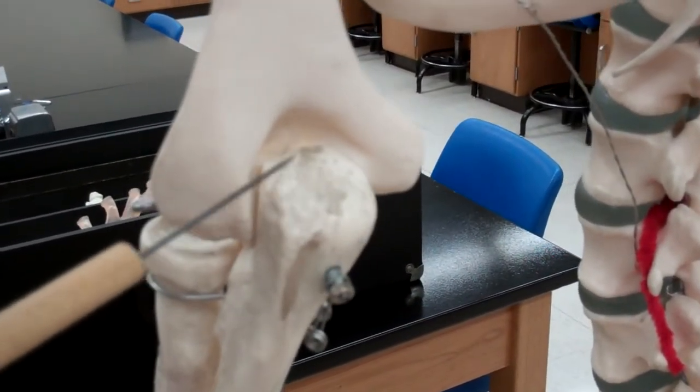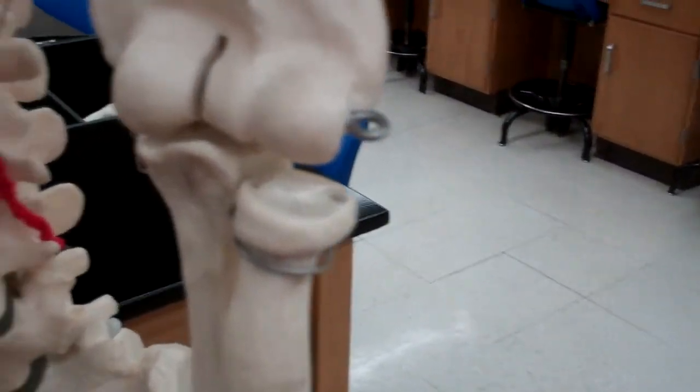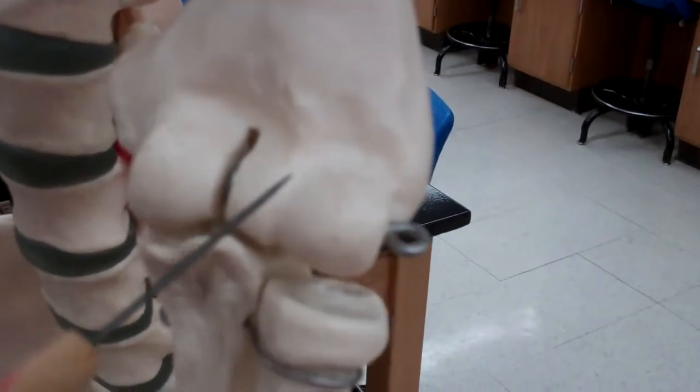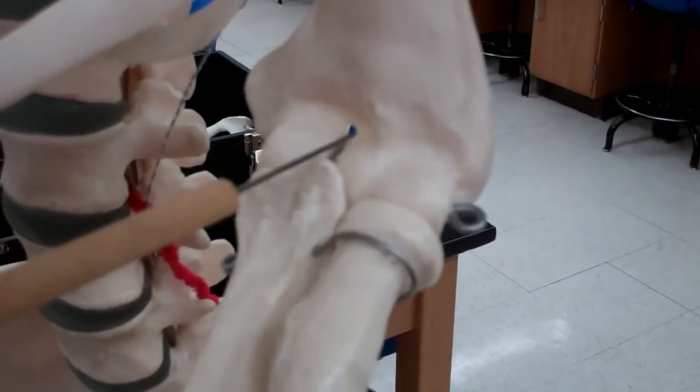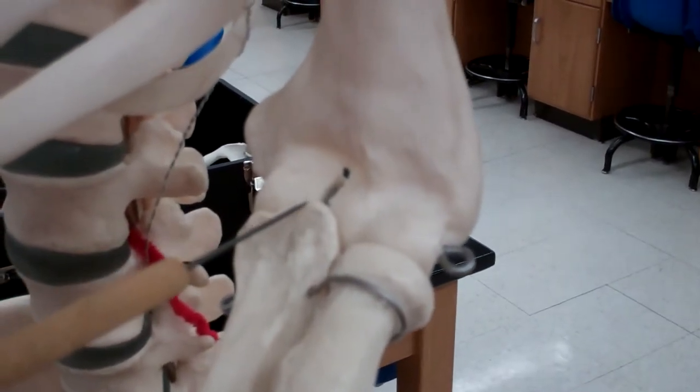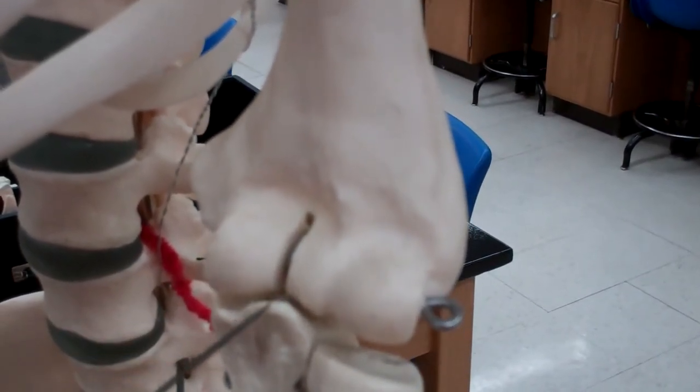And then on the anterior side, we can also see that indentation fossa there. That's the coronoid fossa that is going to be articulating with the coronoid process of the ulna.